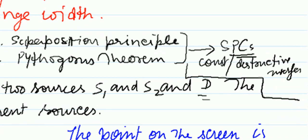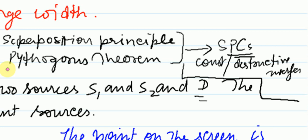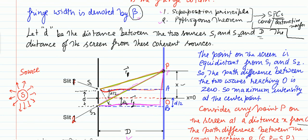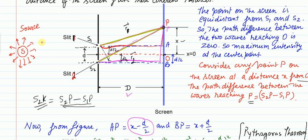The supporting concepts needed to derive beta, the fringe width, are: the superposition principle, the Pythagorean theorem, and the idea of constructive and destructive interference fringes — specifically the path difference conditions for constructive interference. Using these three physical concepts, let us revisit the same experiment as in Young's double slit experiment.